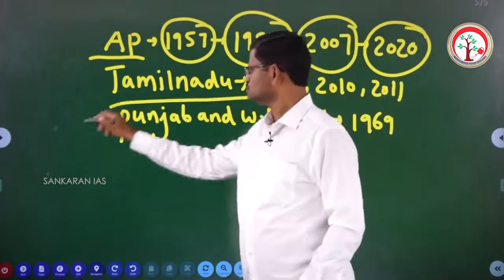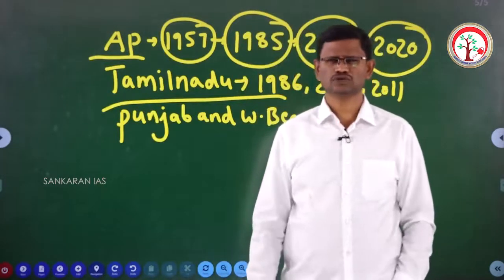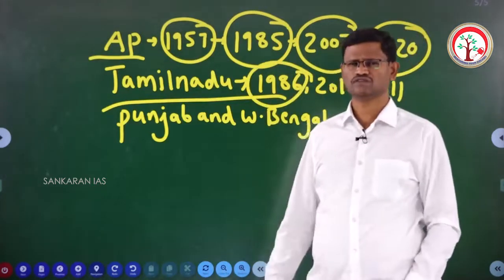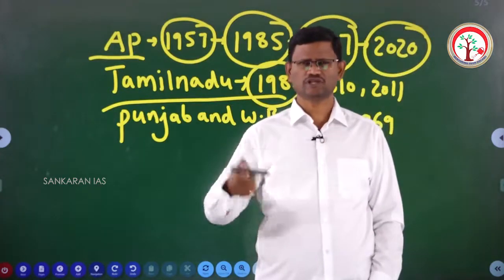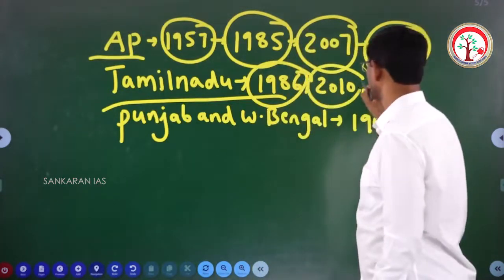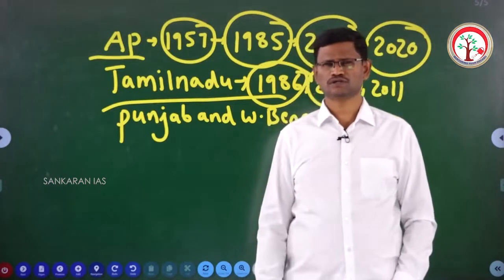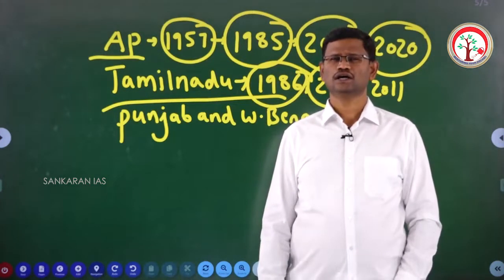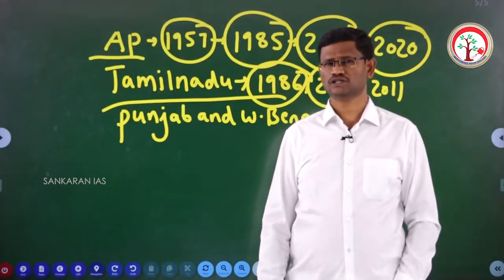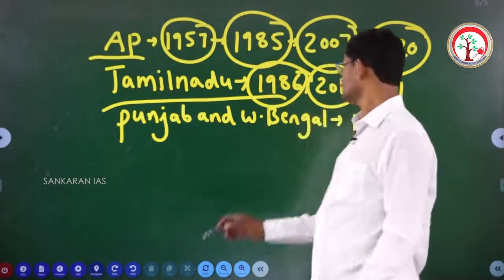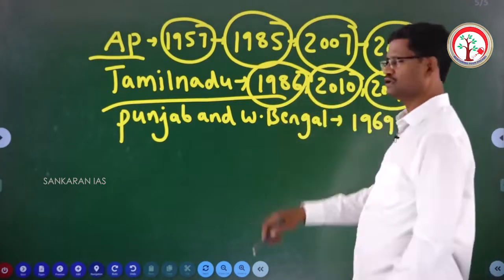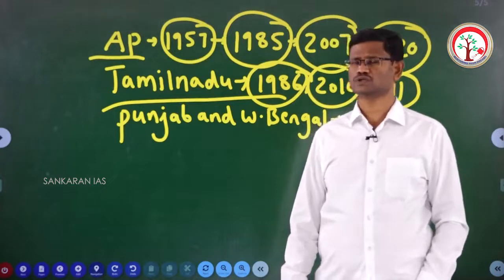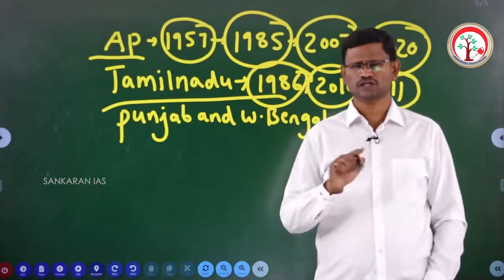Similarly, Tamil Nadu had a legislative council till 1986. In 1986, the legislative council of Tamil Nadu was abolished. Subsequently, in 2010, the Tamil Nadu state legislative assembly passed a resolution for the creation of a legislative council. Accordingly, the Indian parliament enacted a law for the creation of the legislative council. But very soon, in the next year in 2011, again the Tamil Nadu legislative assembly passed a resolution for not having a legislative council. So in the state of Tamil Nadu, the legislative council was not created.